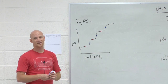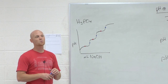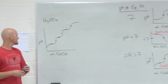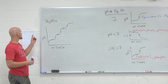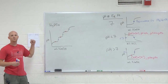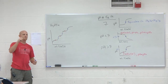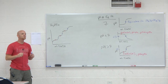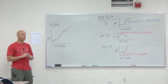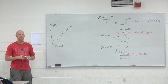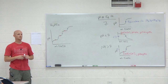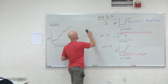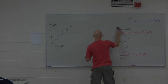Now we move on to titration calculations — the most challenging calculations in this chapter. There are five general types of calculations: strong acid, strong base, weak acid, weak base, and buffers. Every titration calculation ends up being one of those five types, which is why knowing those five types first is essential.